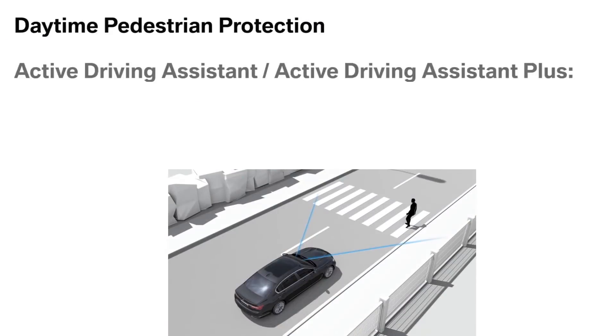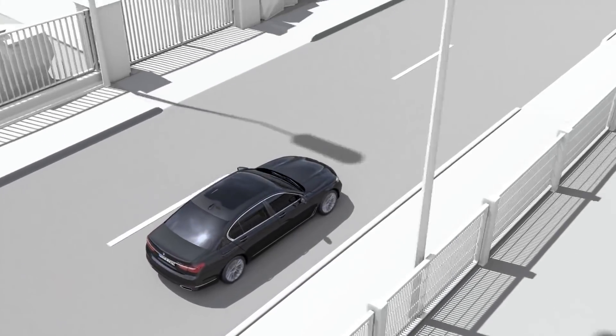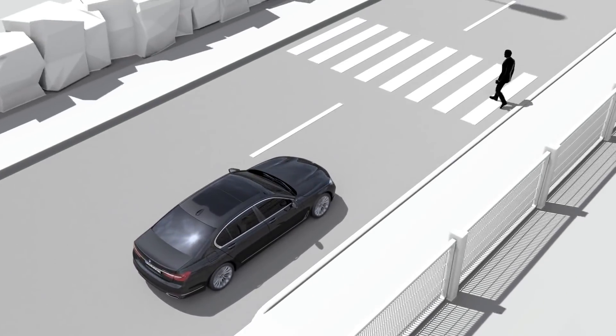Daytime pedestrian protection can help to prevent accidents with pedestrians at city speeds. The feature is part of the active driving assistant and active driving assistant plus options. It is camera-based and delivers acoustic and visual warnings, and this system includes braking intervention. While driving at city speeds, a camera located near the interior rear view mirror detects people in a certain range.